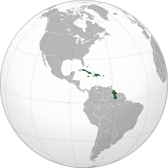The French West Indies included Anguilla (briefly), Antigua and Barbuda (briefly), Dominica, Dominican Republic (briefly), Grenada, Haiti (formerly St. Domingue), Montserrat (briefly), St. Lucia, St. Vincent and the Grenadines, St. Eustatius (briefly), St. Martin, St. Kitts (briefly), Tobago (briefly), St. Croix, and the current French overseas departments of French Guiana, Martinique and Guadeloupe, including Marie Galante, La Désirade and Les Saintes, and the French overseas collectivities of St. Barthélemy and St. Martin.